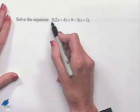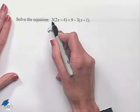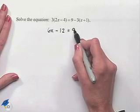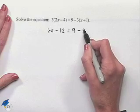That's going to give us 3 times 2x, which would give us 6x, minus 3 times 4, which is 12. On the right-hand side, we'll have 9 minus, we'll have 3 times x, which gives us 3x.